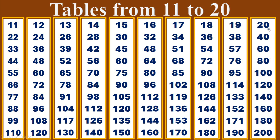Twenty times table. Twenty ones are twenty. Twenty twos are forty. Twenty threes are sixty. Twenty fours are eighty. Twenty fives are one hundred. Twenty sixes are one hundred and twenty. Twenty sevens are one hundred and forty. Twenty eights are one hundred and sixty. Twenty nines are one hundred and eighty. Twenty tens are two hundred.